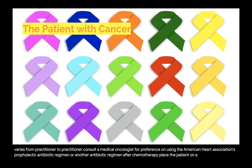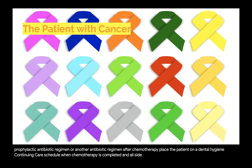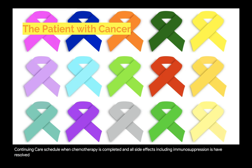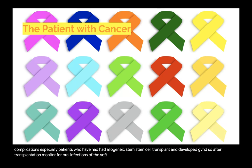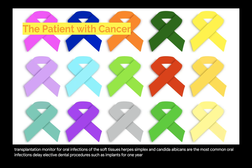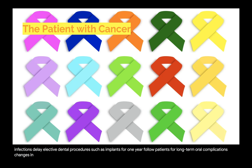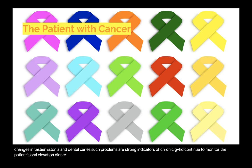After chemotherapy is completed and all side effects including immunosuppression have resolved, place the patient on a dental hygiene continuing care schedule. For hematopoietic stem cell transplantation: some patients develop acute oral complications, especially those with allogeneic stem cell transplant who developed GVHD. After transplantation, monitor for oral infections of the soft tissues — herpes simplex and Candida albicans are the most common. Delay elective dental procedures such as implants for one year. Follow patients for long-term oral complications including changes in taste, xerostomia, and dental caries — strong indicators of chronic GVHD. Continue to monitor for biofilm control, tooth demineralization, dental caries, and oral infection, and follow transplant patients carefully for second malignancies in the oral region.